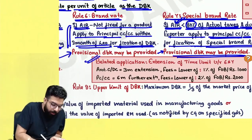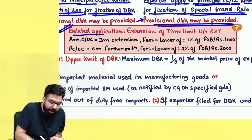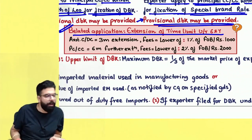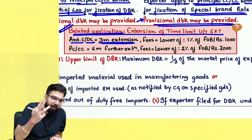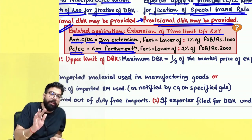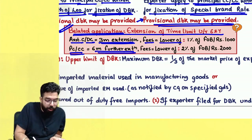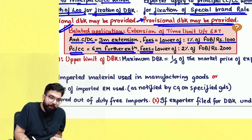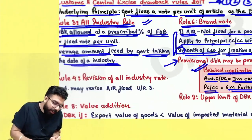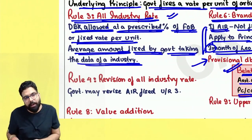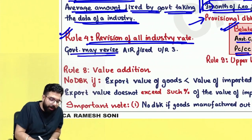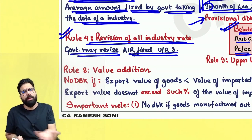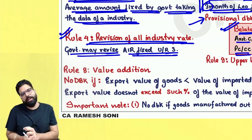If you don't apply within 3 months for brand rate or special brand rate, extension of time limit can be granted. Assistant commissioner or deputy commissioner can extend by further 3 months (fee: lower of 1% of FOB or Rs. 1,000). Principal commissioner or commissioner can extend by further 6 months (fee: lower of 2% of FOB or Rs. 2,000). Government can also revise all industry rate under rule 4 as duties change over time.